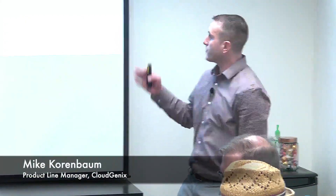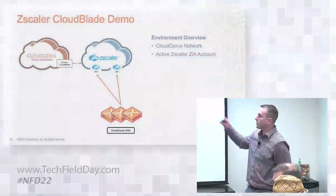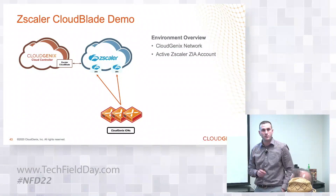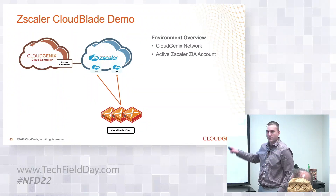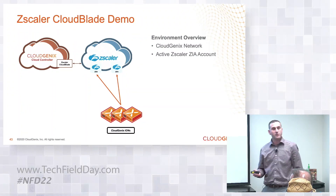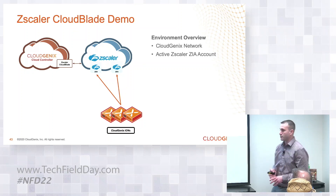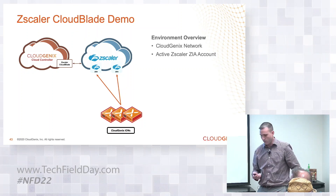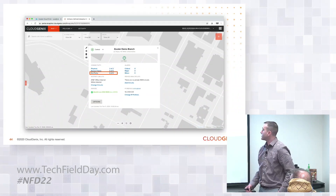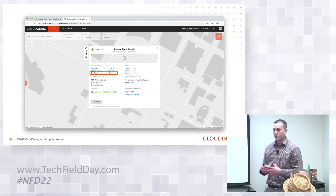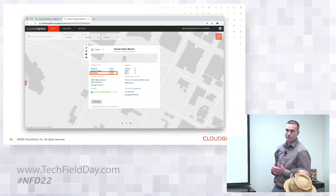Looking at the environment overview here, we have the CloudGenix controller with our Zscaler CloudBlade running with the API integrations with Zscaler and CloudGenix. The only thing we need is an active Zscaler subscription and a CloudGenix native network. In our demo environment, we have a single branch that is unconfigured and has no third-party VPN tunnels configured whatsoever.